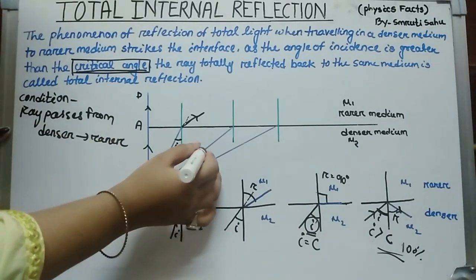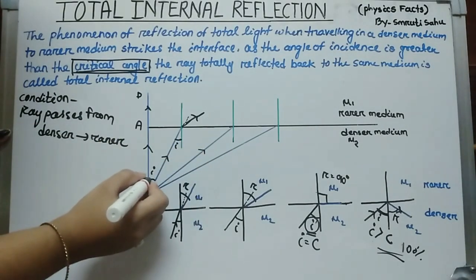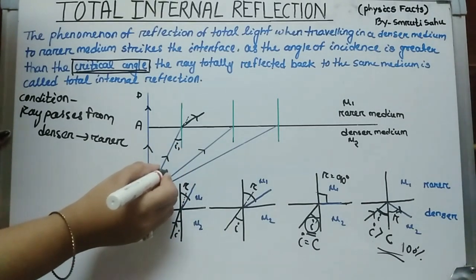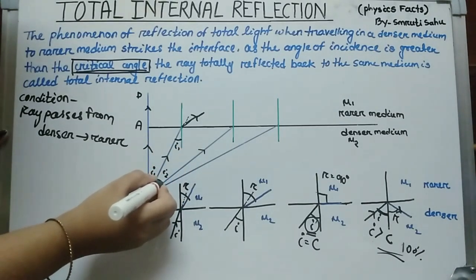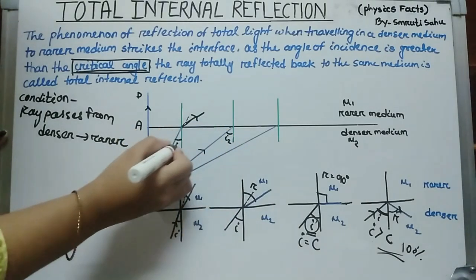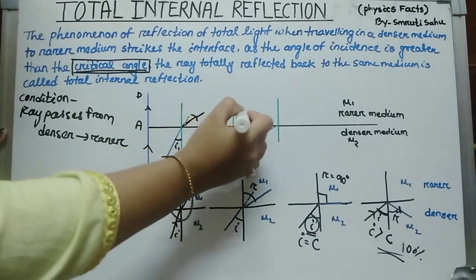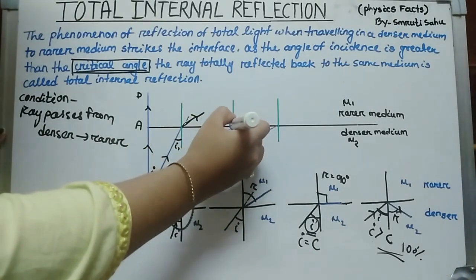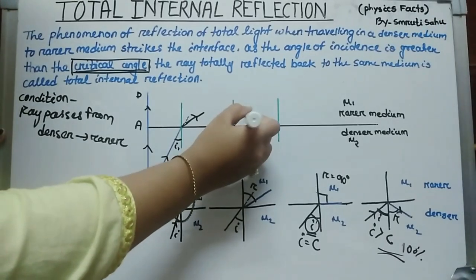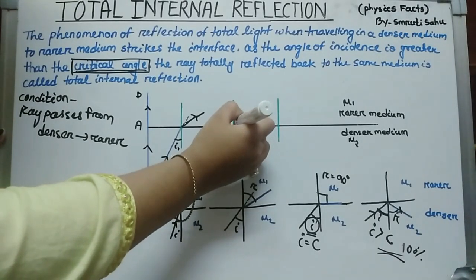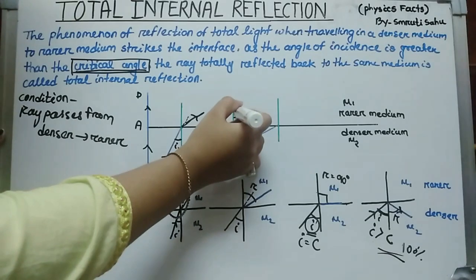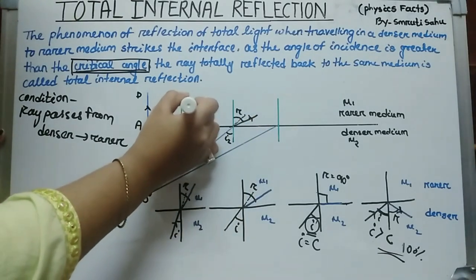Take another incident ray. This one has angle of incidence I1. Next, angle I2 is greater than I1, so the angle of refraction is also greater. Here the actual path of the incident ray deviates, and this is the larger angle of refraction.